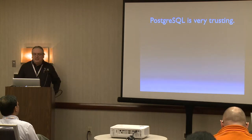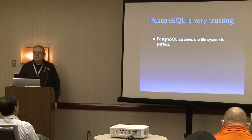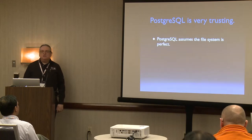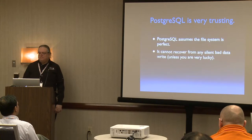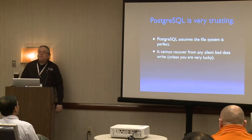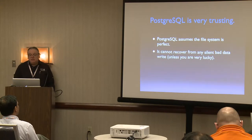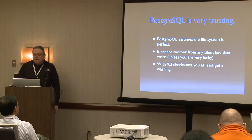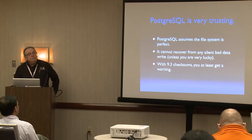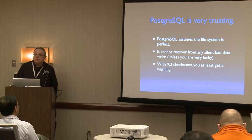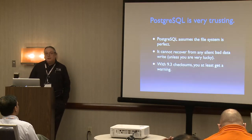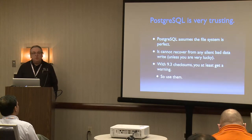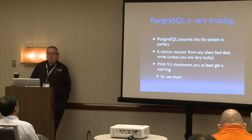Postgres is very trusting. It basically assumes the file system is perfect — that everything it writes will come back exactly as it wrote it. It can't recover from any bad data write unless you're very lucky. 9.3 introduced page-level checksums, so at least you get a warning when the data coming back is bad. Use 9.3 checksums if you possibly can.